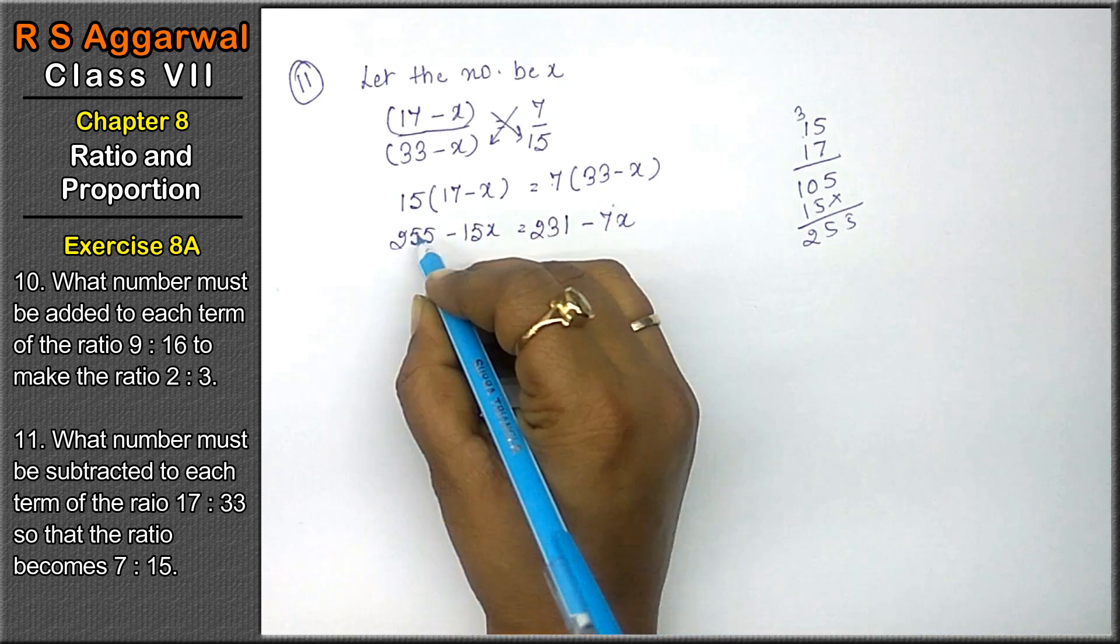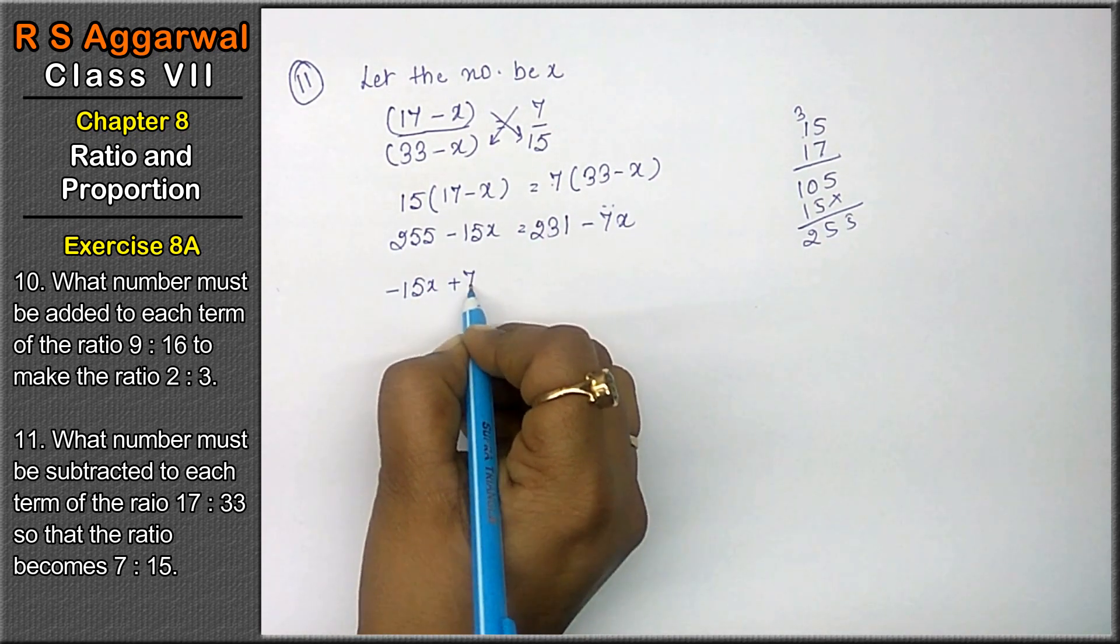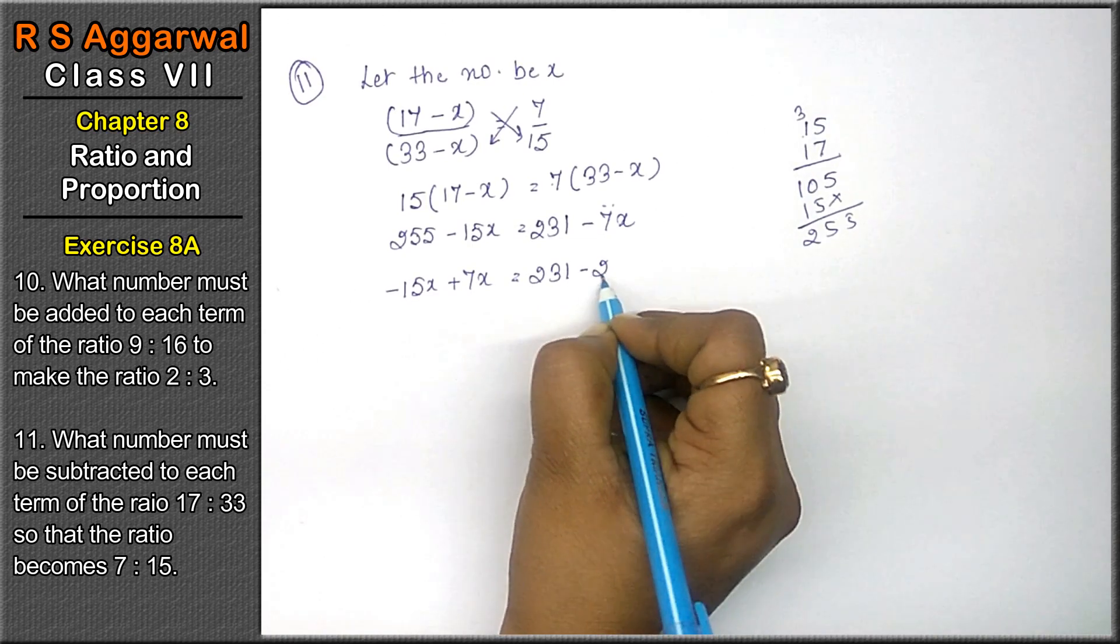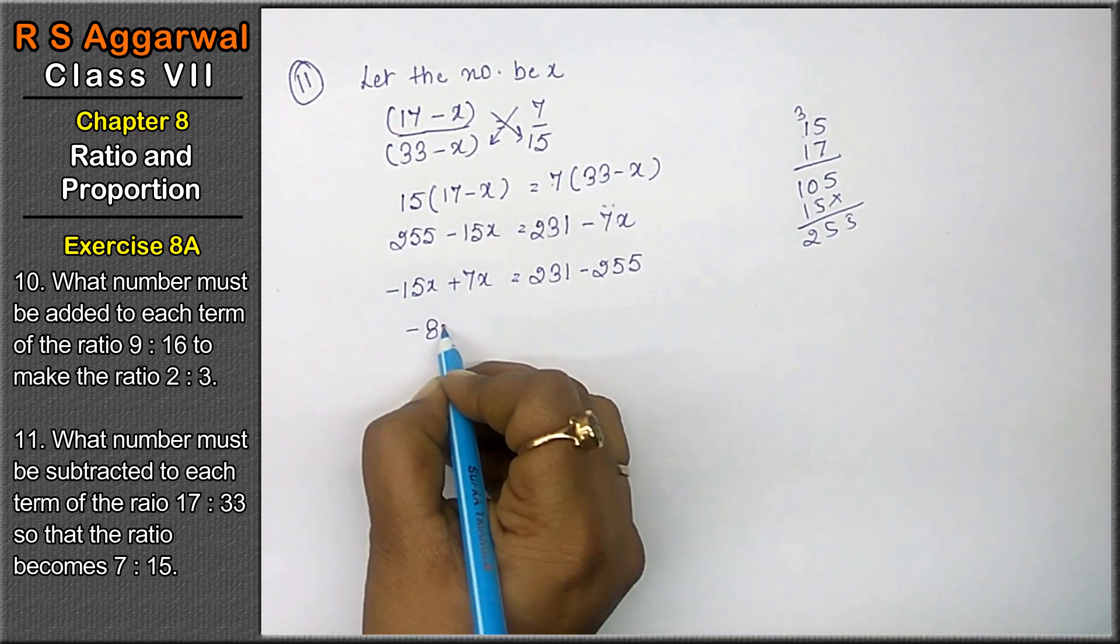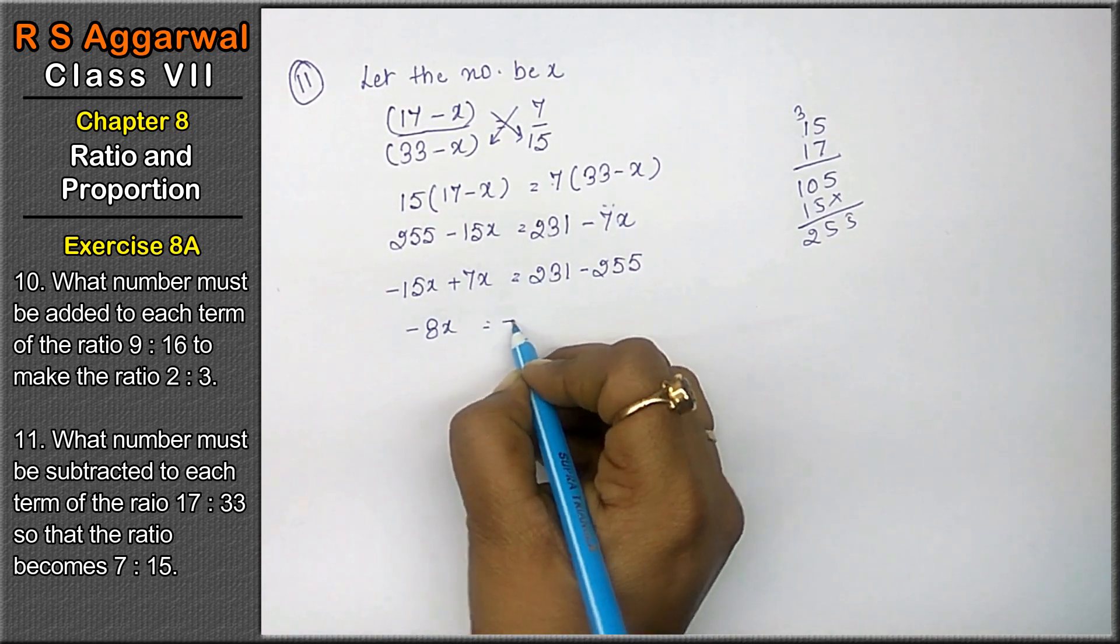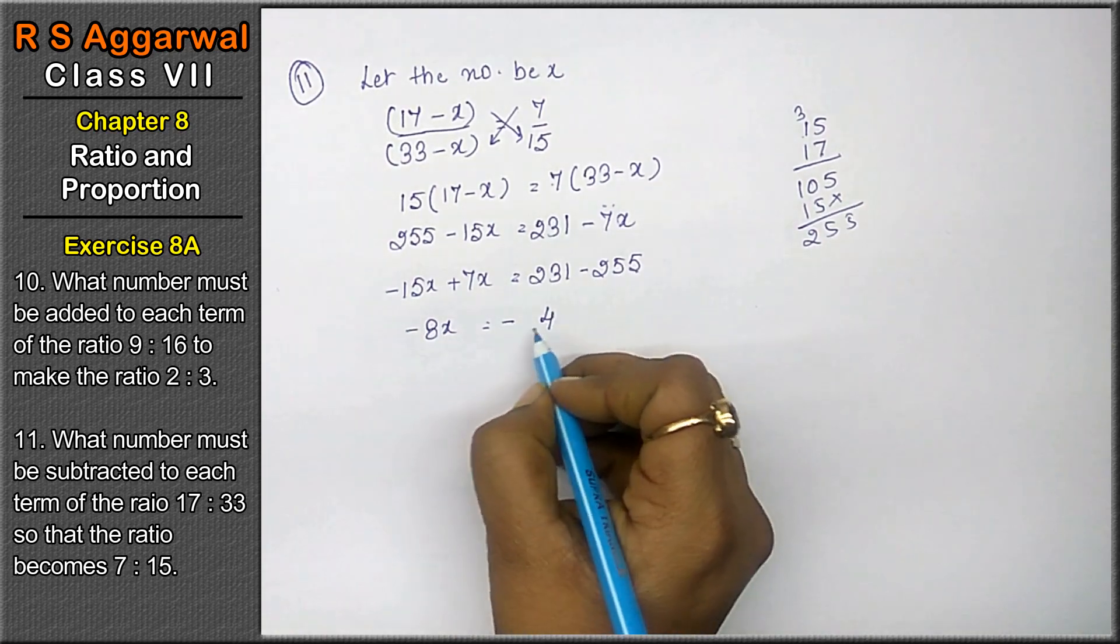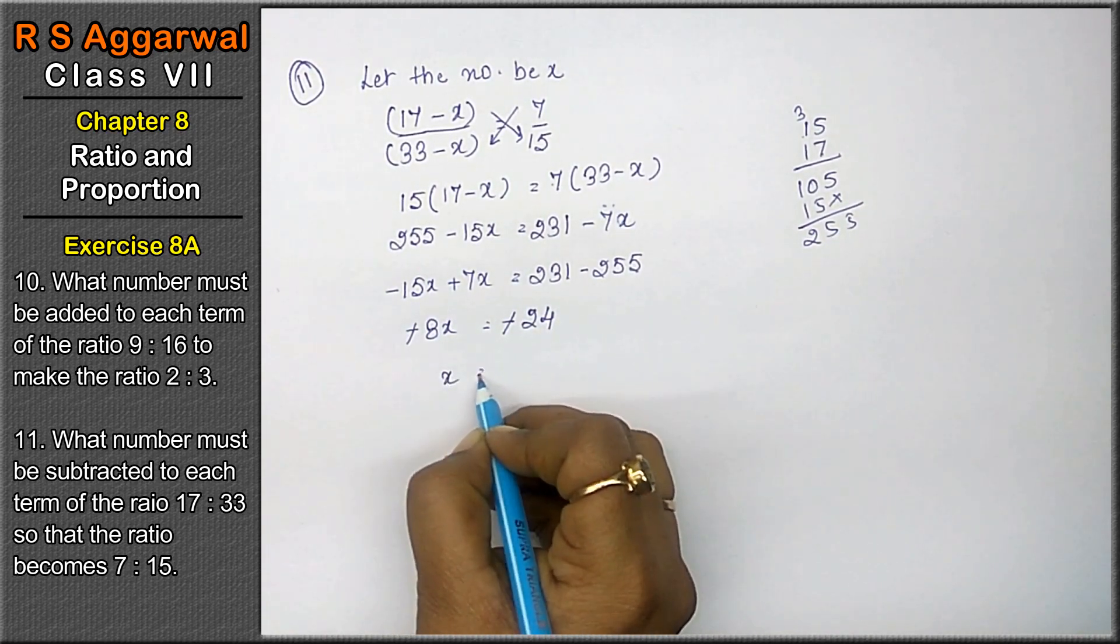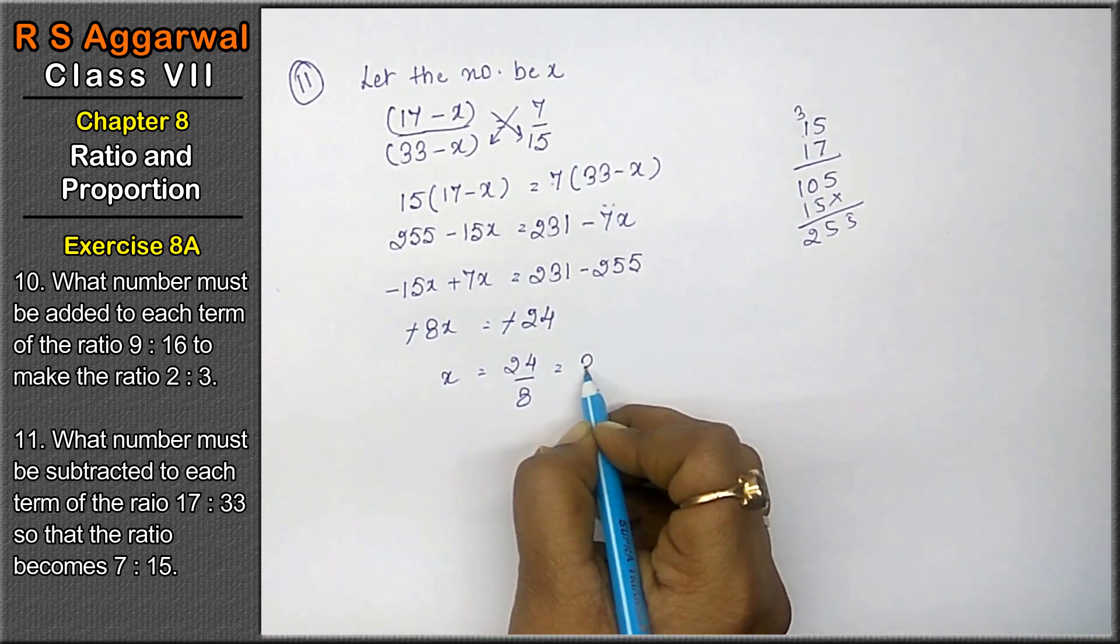This term on this side, this term on this side. So minus 15x plus 7x equals to 231 minus 255. This becomes minus 8x equals to minus. 5 minus 1 is 4, 5 minus 3 is 2, so 24. Minus minus will get cancelled. x equals to 24 upon 8. Answer is 3.